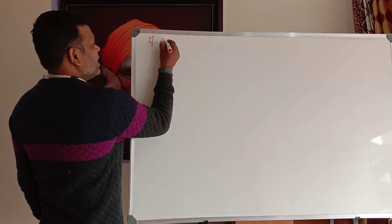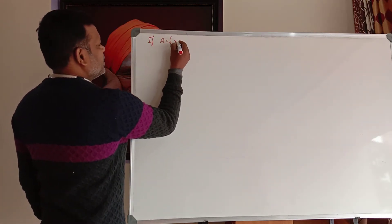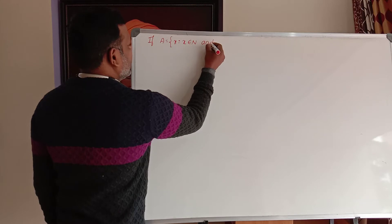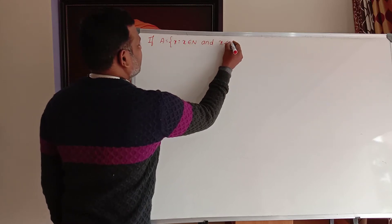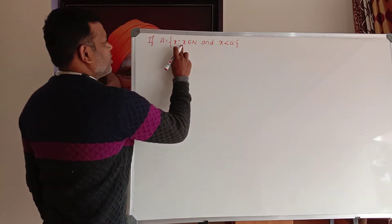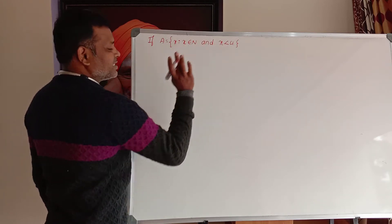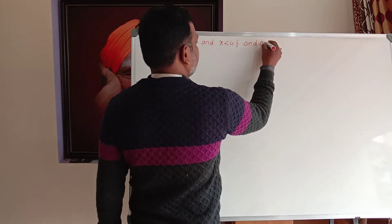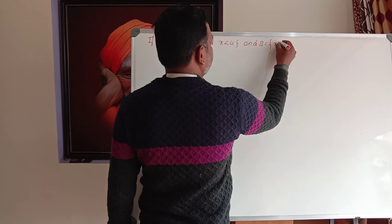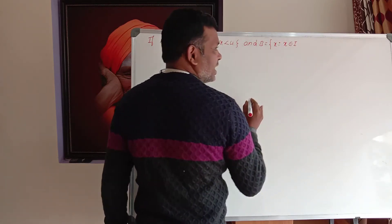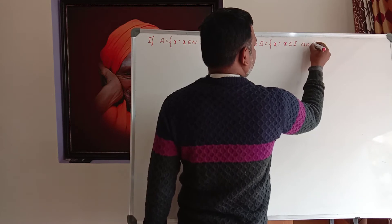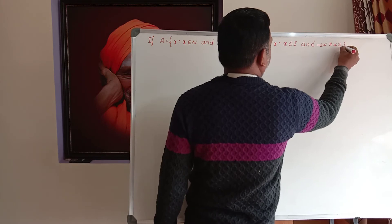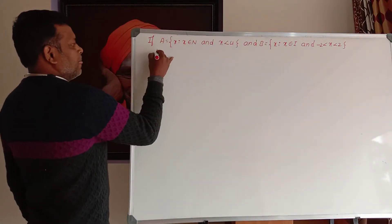For example, if A is equal to x such that x belongs to natural numbers and x is less than 4. And another one: B is equal to x such that x belongs to I — where I is the integer — and x is greater than minus 2 and less than plus 2.